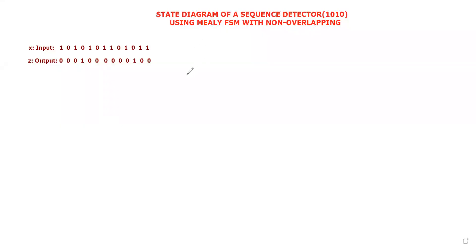In this video, I will explain how to draw the state diagram of a sequence detector to detect the sequence of bits 1010 using a Mealy finite state machine with non-overlapping condition. The sequence detector is the type of sequential circuit used to detect the sequence of bits 1010 in the given input data X.